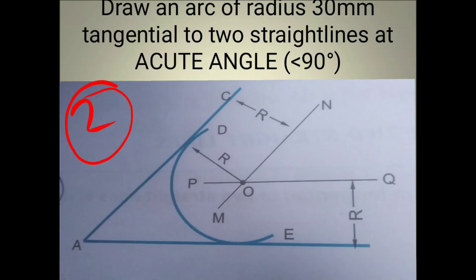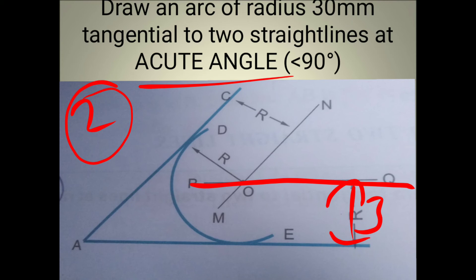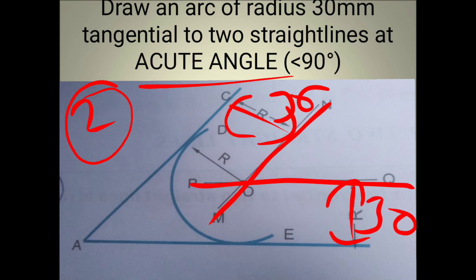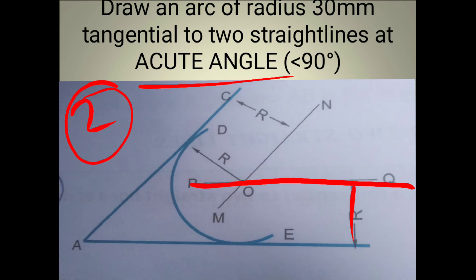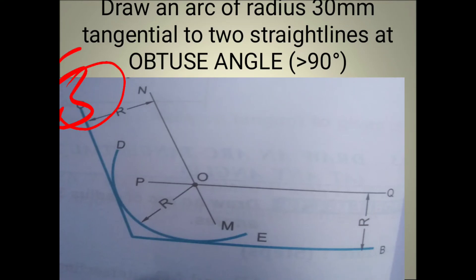So for two straight lines at some angle below 90 degrees: draw a PQ parallel line at distance 30 mm, similarly draw NM line at distance 30 mm. These two meet at point O. With point O as center, draw an arc of radius 30 mm. This is called the tangential arc in between two straight lines having an acute angle below 90 degrees. Next is Model Number Three — obtuse angle.